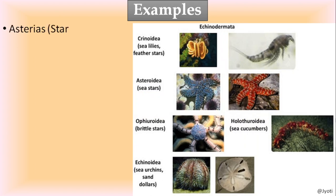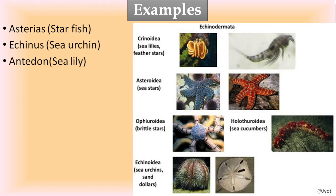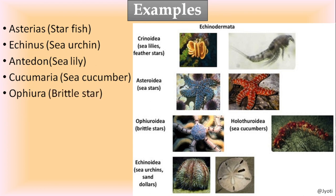Here are some examples of Echinodermata. Asterias, commonly known as starfish. Echinus, commonly known as sea urchin. Antedon, commonly known as sea lily. Cucumaria, commonly known as sea cucumber - they appear like a cucumber. Ophiura, commonly known as brittle star.